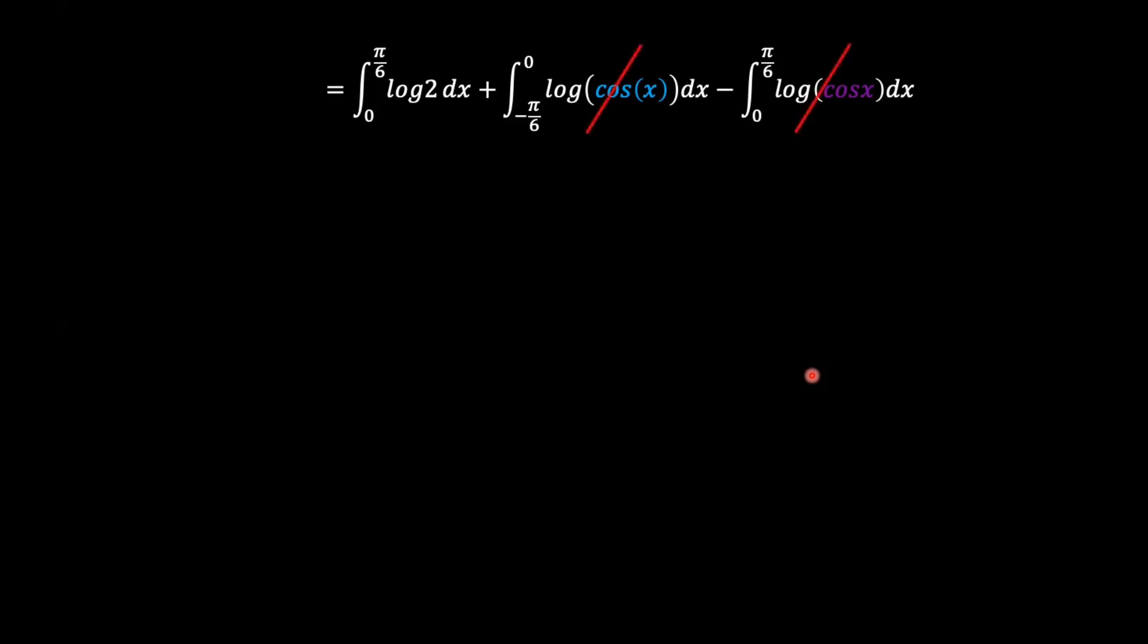And so those would cancel out and we are left with the integral of log 2 from 0 to pi over 6. And so our answer is log 2 x evaluated from 0 to pi over 6, and so the final answer here is pi over 6 times log 2. This is our final answer.